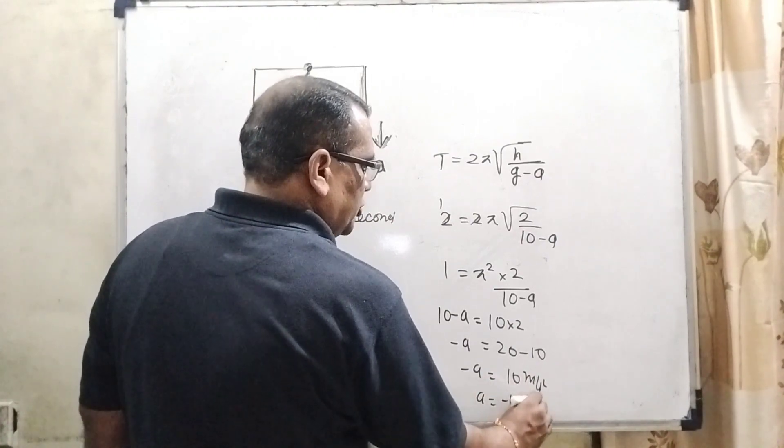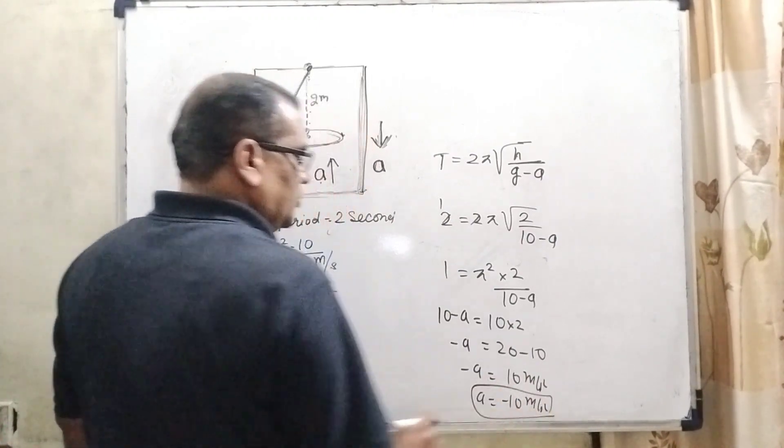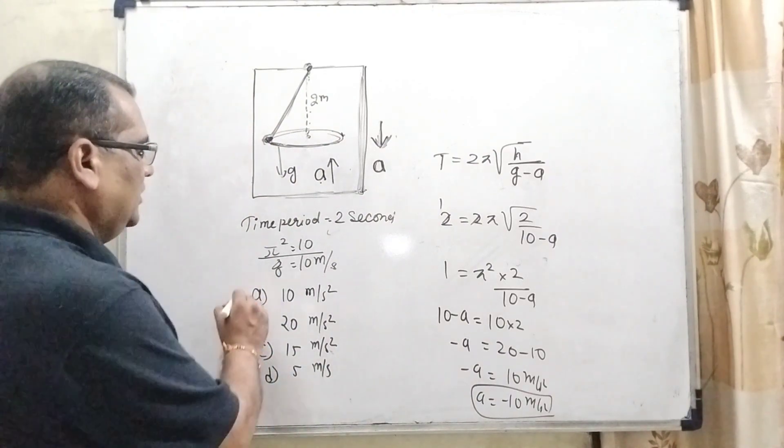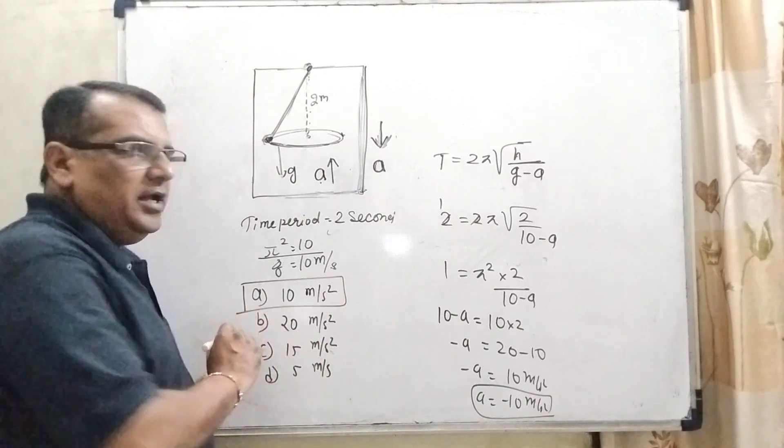Here, the minus sign shows the retardation. So A equals 10 meter per second square. Here, option A is correct.